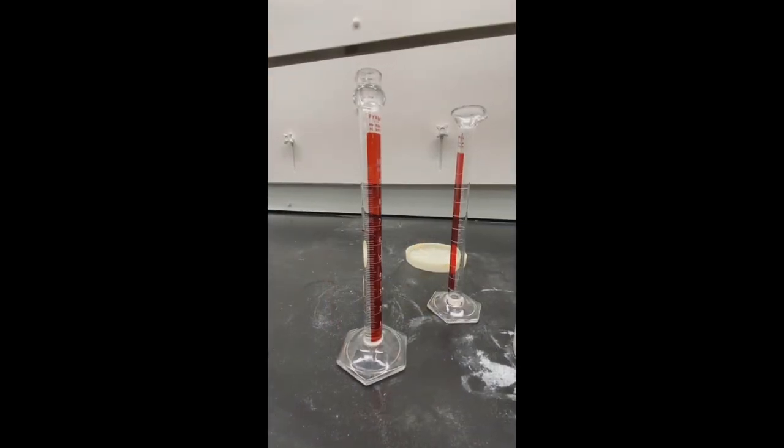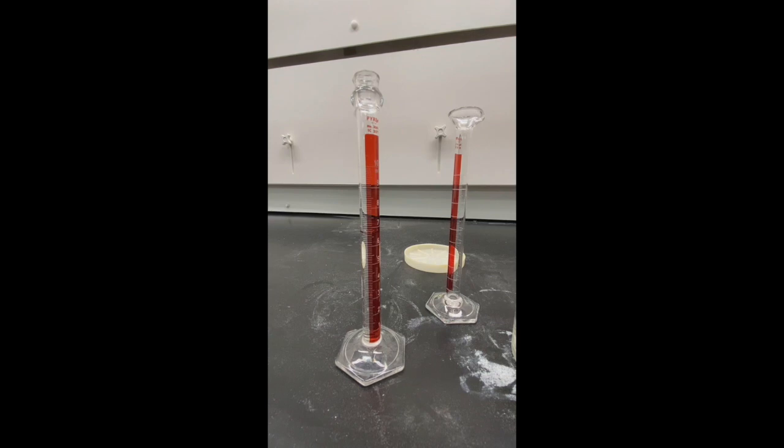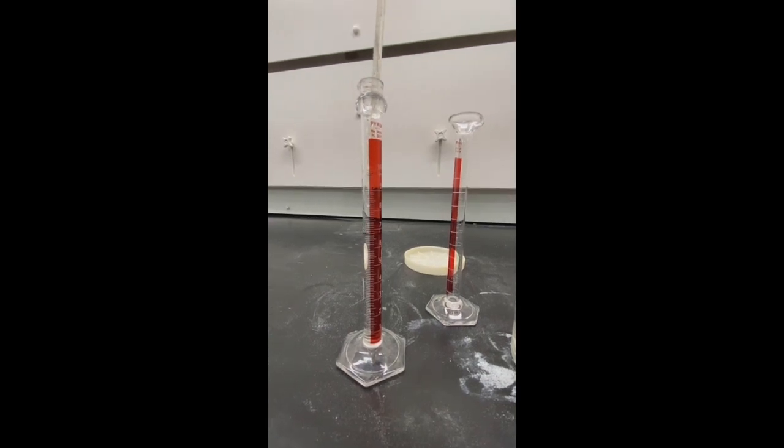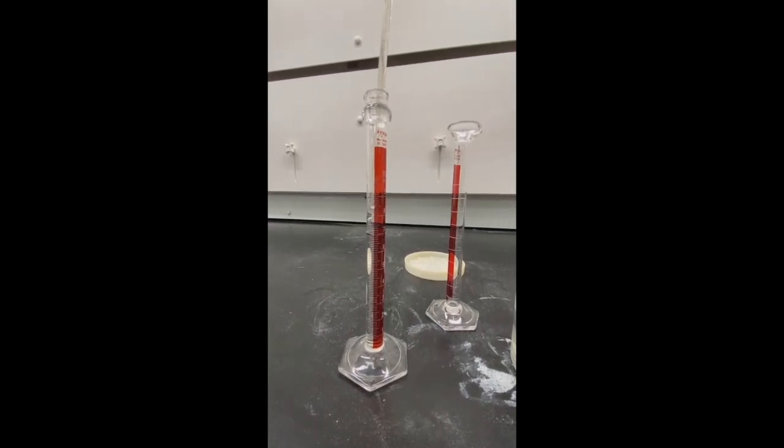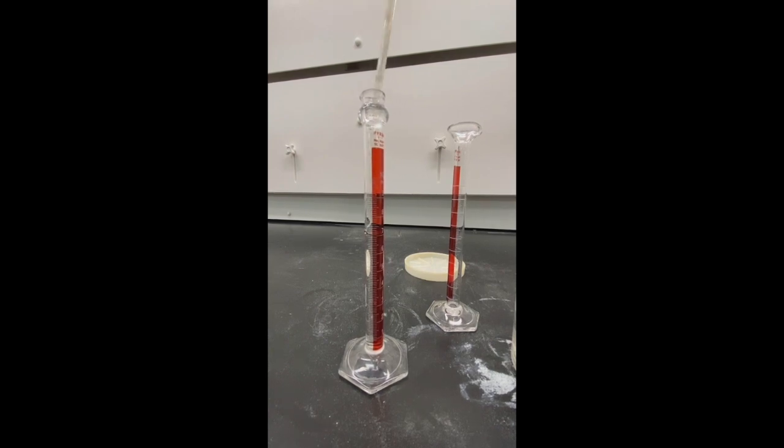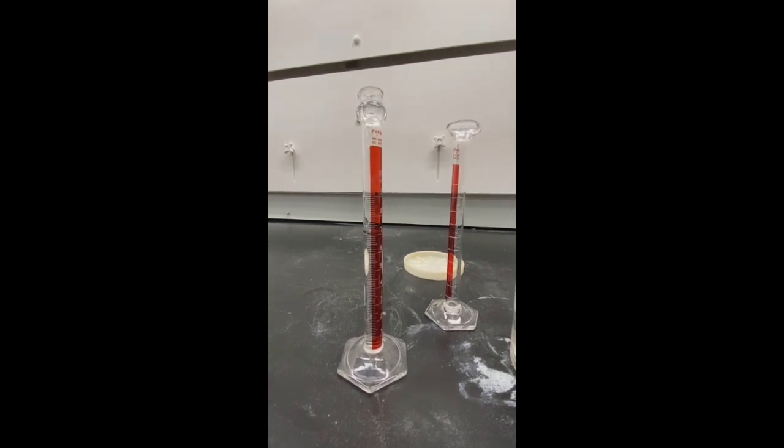I wanted 7 milliliters, so I poured close to the 7, and then I'm going to take the transfer pipette. I'm going to read this at eye level, and I'm going to add carefully dropwise to the bottom of the meniscus is exactly at 7.